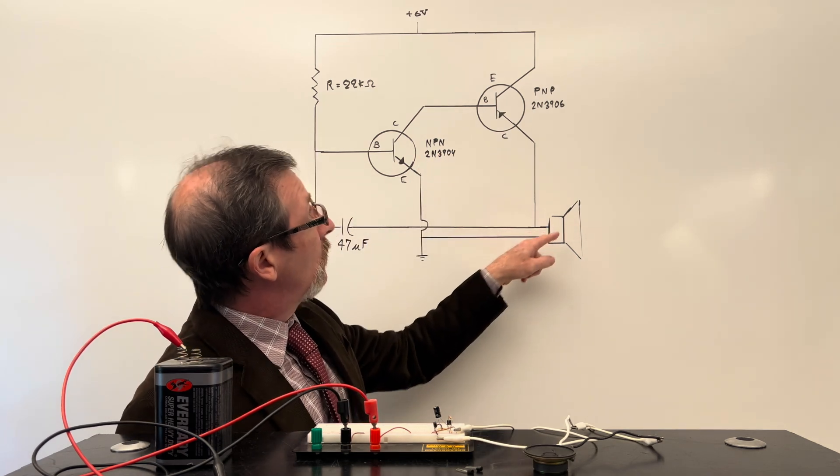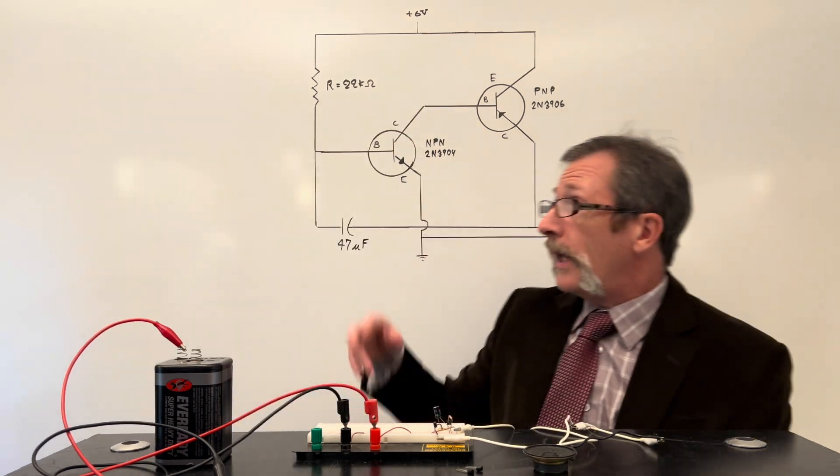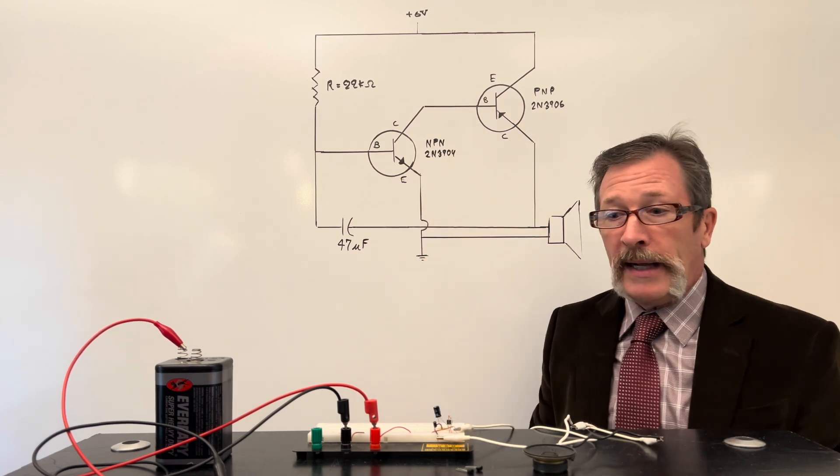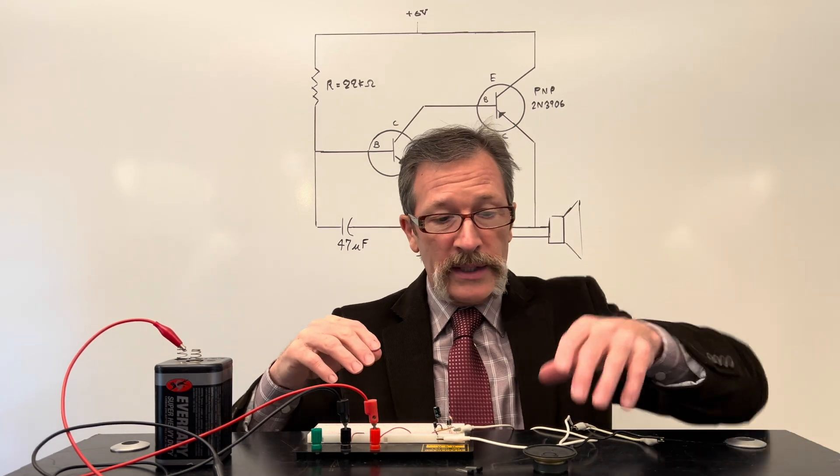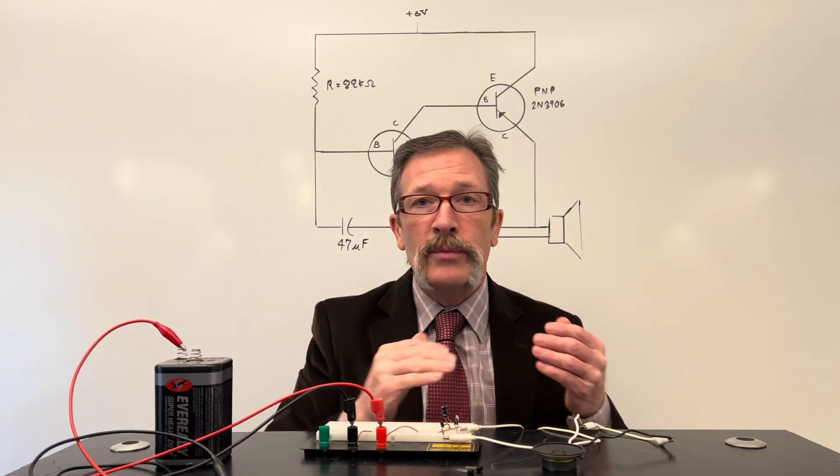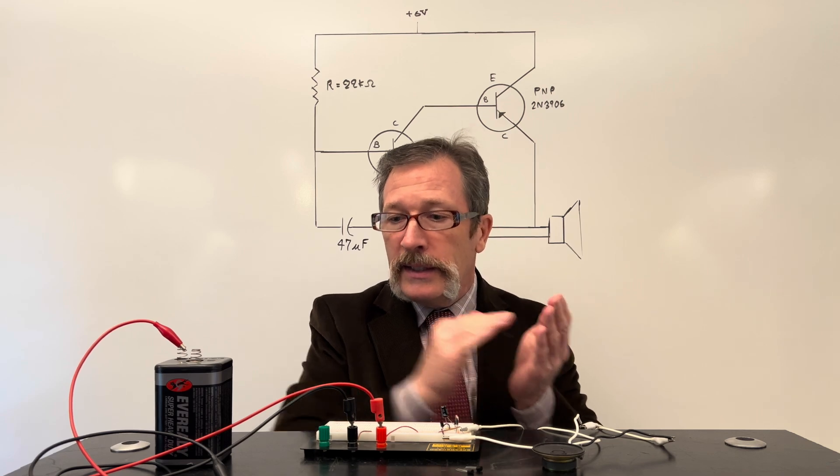We're going to end up connecting that to a speaker. We have a battery up here. We have a resistor, our two transistors connected together, and a capacitor. When you put all these together, here's the speaker, here's the breadboard with the circuit, we end up getting a metronome which is a way to keep the beat.